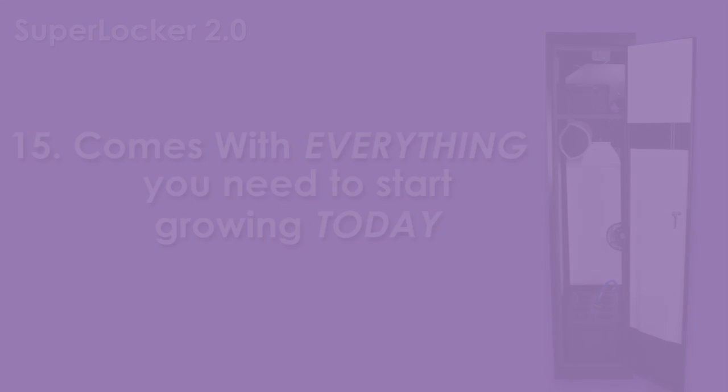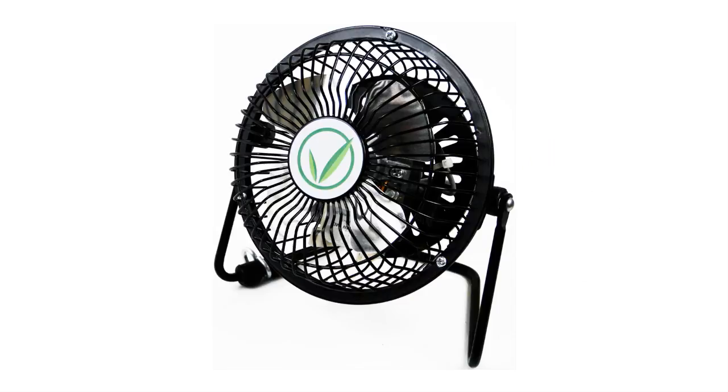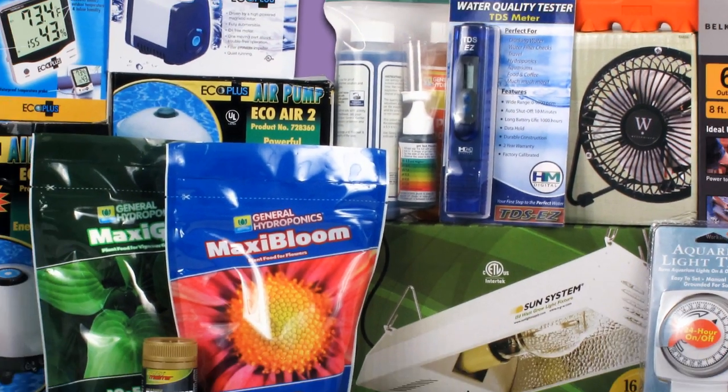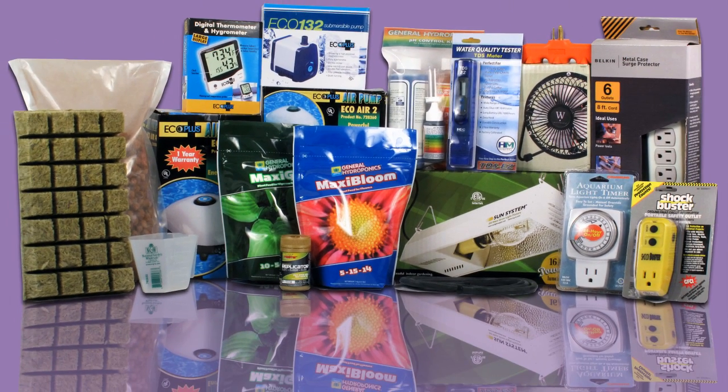When your super closet arrives, it will be outfitted with everything you need to start growing immediately, including a full year of nutrients, a pH balance kit, and a TDS kit.